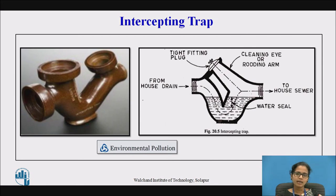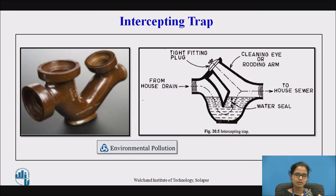The intercepting trap is provided at the junction of a house sewer and a municipal sewer. It avoids the waste coming from the municipal sewer from entering into the house drainage system, and also avoids the foul gases of the municipal drainage from entering into the house drainage system.